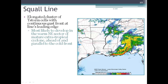Squall lines are typically associated with a mature mid-latitude cyclone, like we spoke about in a previous chapter — those big comma-shaped storm systems. We're just seeing the radar here, not satellite imagery, so we don't see all the cloud cover, but we can clearly see the cold front and the squall line of intense thunderstorms right out in front of it.